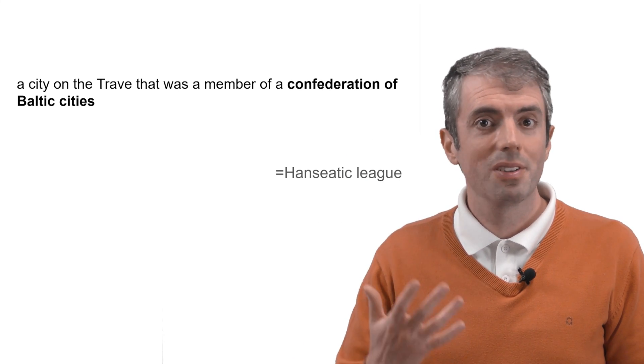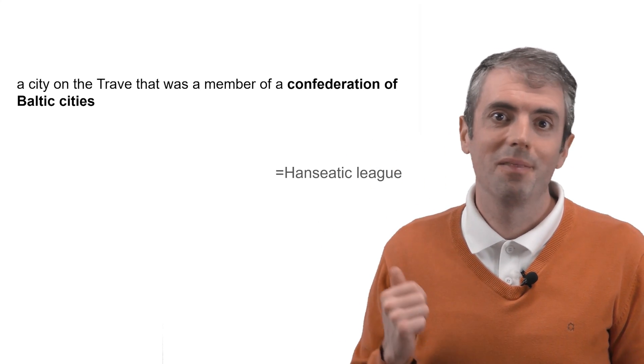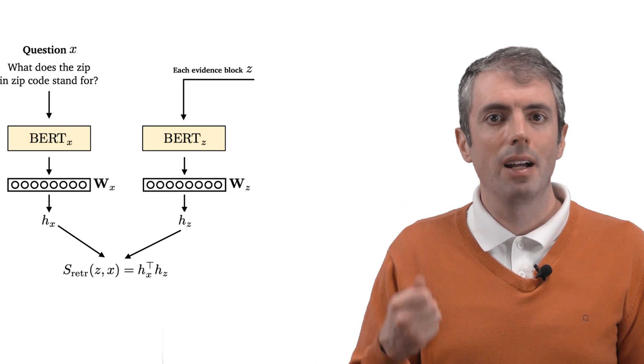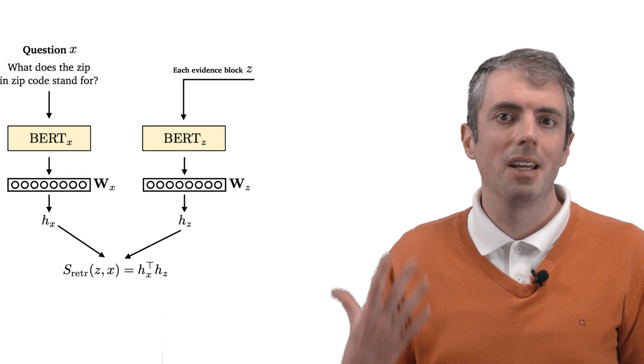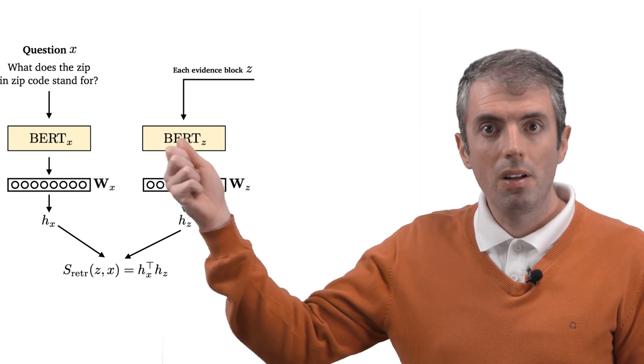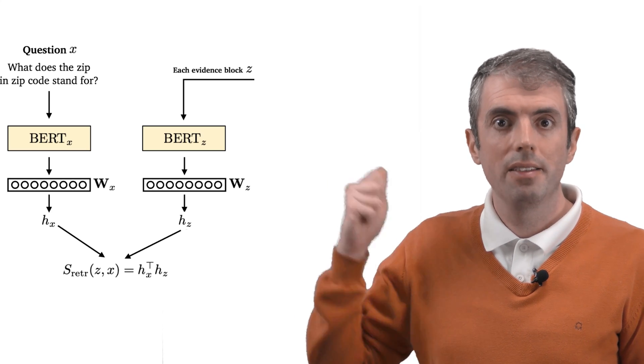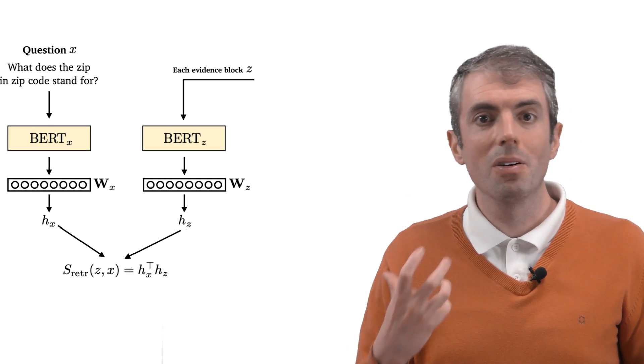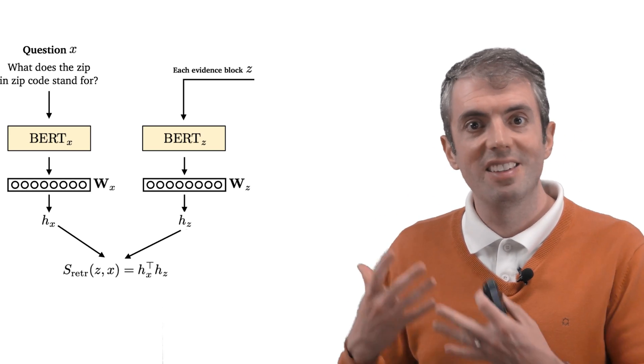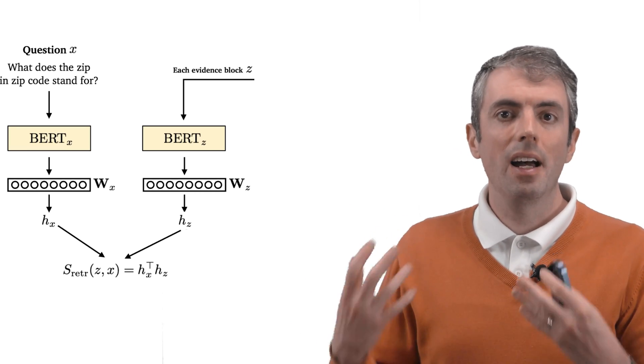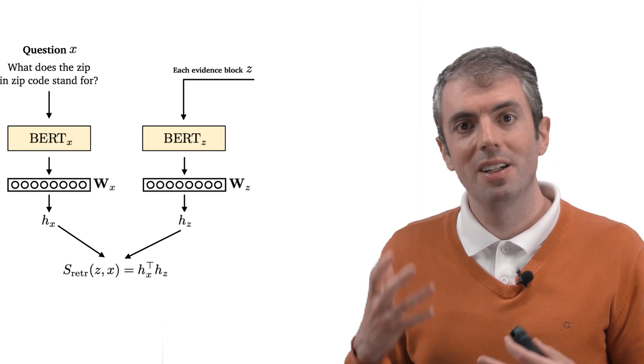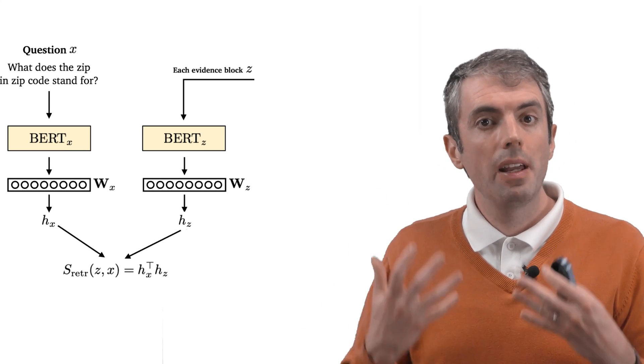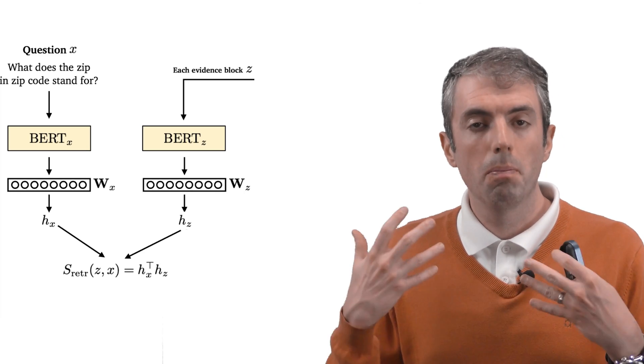This is where frameworks like PyTorch that we've been talking about really show their usefulness. You can create a giant computation graph that not only learns a representation of a question, but also of the evidence passages where you can easily find the answer. So now you learn to push who said to be or not to be close to the evidence passages that contain Hamlet, and city on the Trava that was a member of the confederation of Baltic cities close to the evidence passages that contain Lübeck.